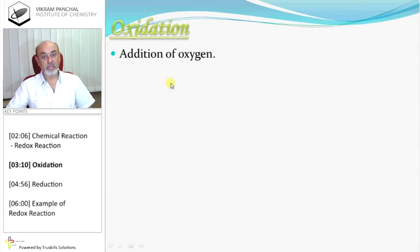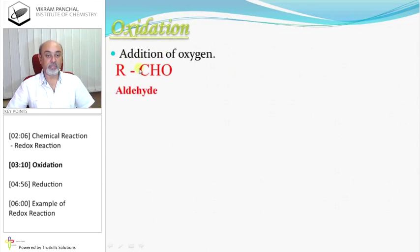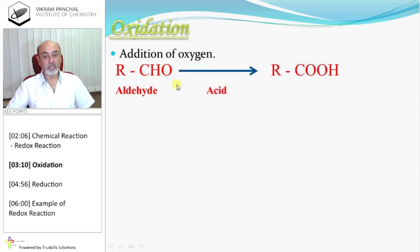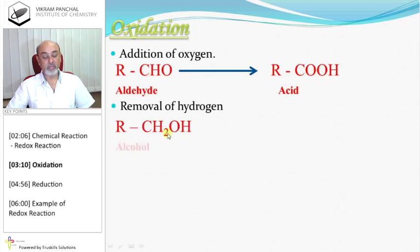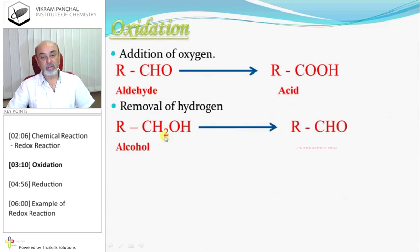Oxidation. Addition of oxygen is known as oxidation. For example, this is an aldehyde (RCHO). If you add oxygen to this, the product has one more oxygen, so it is called oxidation. Removal of hydrogen is also oxidation: when hydrogen is removed from a compound, we get RCHO, and that means this is oxidation.